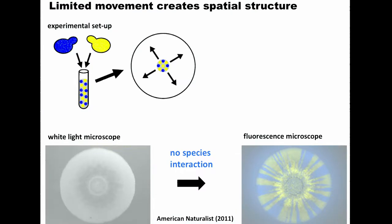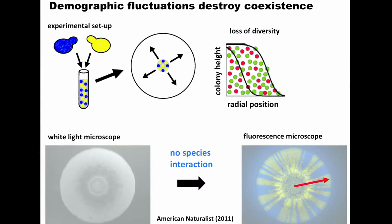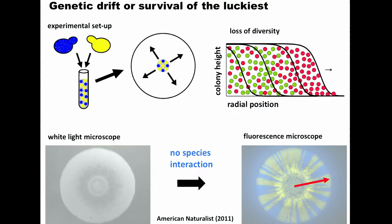We can think about this theoretically by making a connection with population genetics. Looking along the expansion direction traces the history of the expansion. In these experiments, most growth happens at the outside of the colony where there are enough nutrients. In the beginning you have a mixed population, but as the expansion proceeds there are fluctuations - known in population genetics as genetic drift - which eventually cause one of the genotypes to go extinct and the other to reach fixation. As a result, you end up with the formation of a sector of a single color.